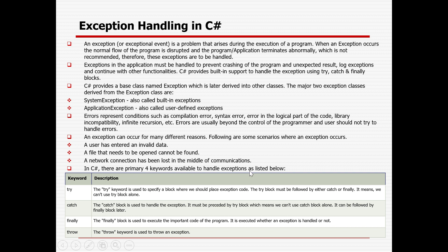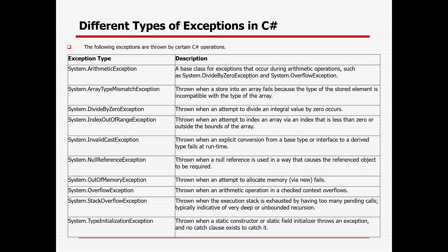In C# there are primarily four keywords available to handle exceptions: try, catch, finally, and throw. The try keyword is used to specify a block where exception code should be placed; the try block must be followed by either catch or finally — you can't use try alone. The catch block is used to handle the exception and must be preceded by a try block. The finally block is used to execute important code whether an exception occurs or not. The throw keyword is used to throw a custom exception.